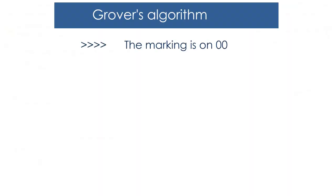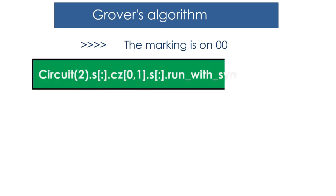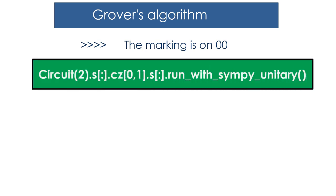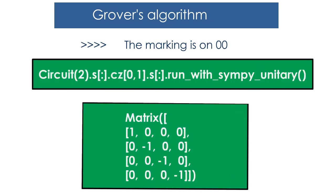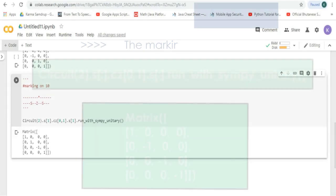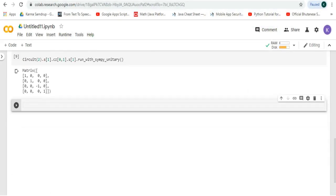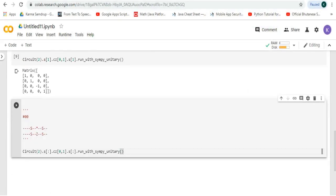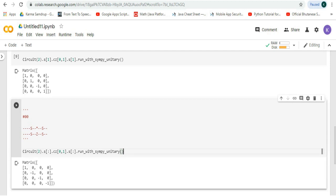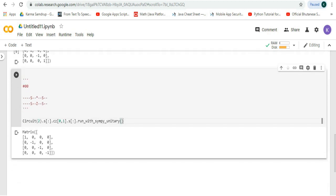Lastly, the marking is on 0 0. When we run this in Google Colab we'll get this output. However, the result is inverted in sign — it has flipped all the minus signs to plus and plus signs to minus. Let's try it in Google Colab, run it, and we can see that we get this output.